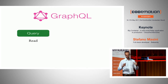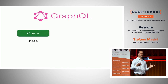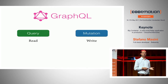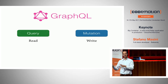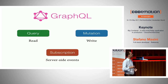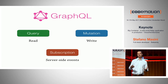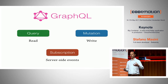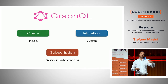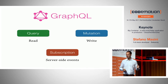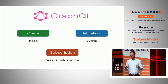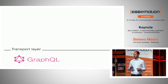GraphQL is made of basically three parts. One is how to read data from the server. Another is called a mutation — how you write data to the server, how you change server-side state. And then there's a new addition, the latest addition, called a subscription. Subscriptions are the way the server can notify the client what information has changed, and the client can have a voice in the process to tell what needs to be notified.